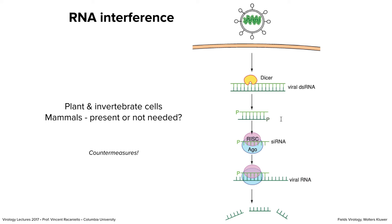RNA interference is largely restricted to plant and invertebrate cells. There's a lot of controversy about whether RNA interference is a defense in mammals — some papers exist but they're controversial. We think maybe we don't need RNA interference because we have protein-based immunity, which plants and invertebrates don't have. In insect cells and plants, if a virus infects the cell and it's a double-stranded RNA virus or makes double-stranded RNA, an enzyme called DICER — a host enzyme — chops up the RNA.